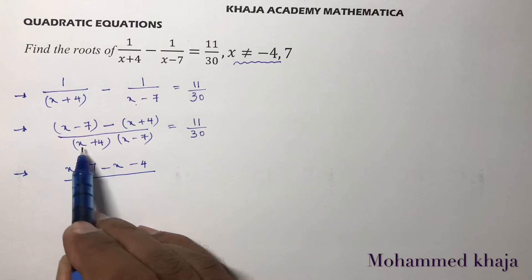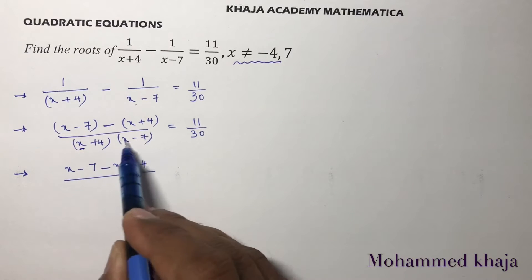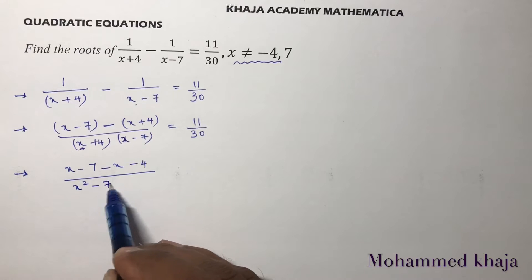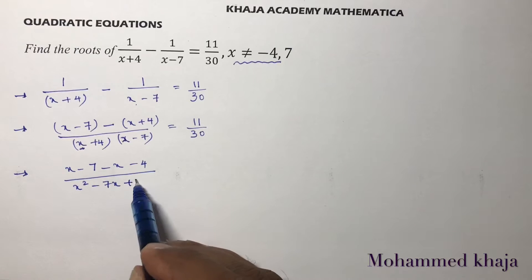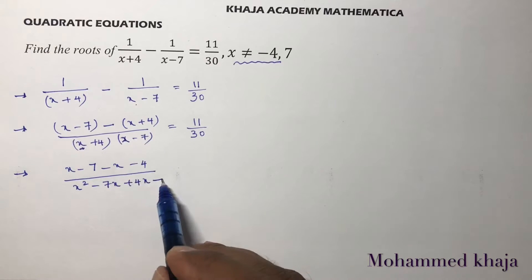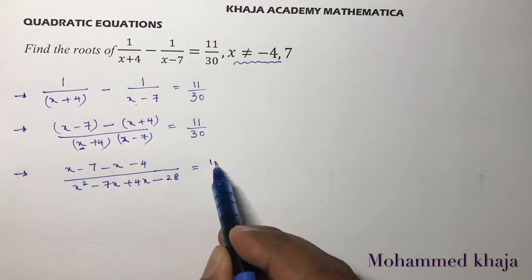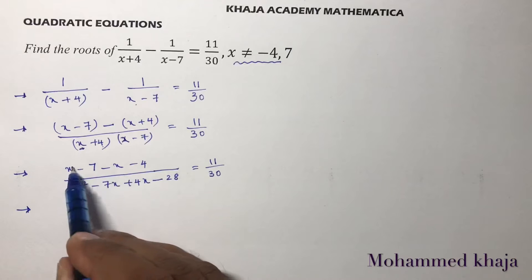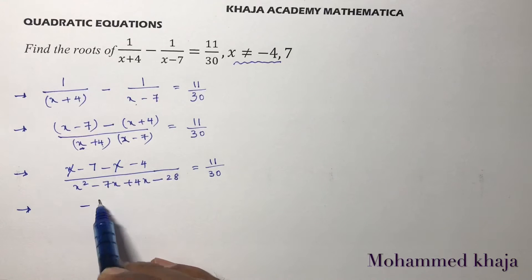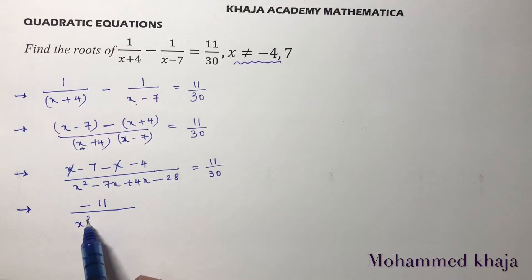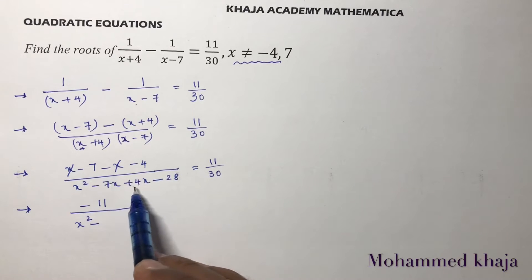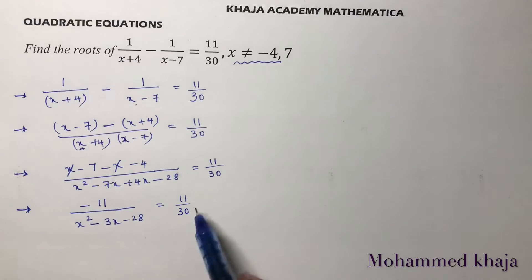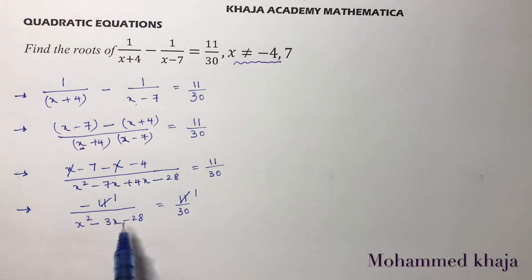Now expanding the denominator: x times x is x squared, x times minus 7 is minus 7x, plus 4 times x is 4x, plus 4 times minus 7 is minus 28. In the numerator: x minus 7 minus x minus 4 simplifies — the x terms cancel, and minus 7 minus 4 gives minus 11. So we have minus 11 over (x squared minus 3x minus 28) equals 11/30.